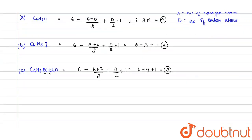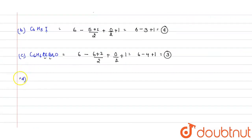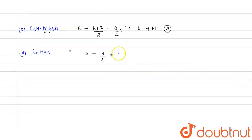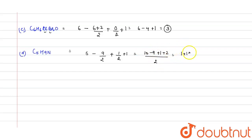Compound D given in the question is C5H9N. This time nitrogen is present. Number of carbon atoms is five, minus nine hydrogen atoms (no halogen), divided by 2, plus one nitrogen atom divided by 2, plus 1. Taking LCM: ten minus nine plus one plus two, divided by 2, equals four divided by 2, which equals two. So the degree of unsaturation for compound D is two.